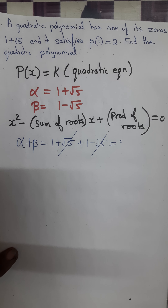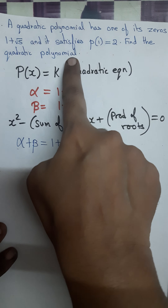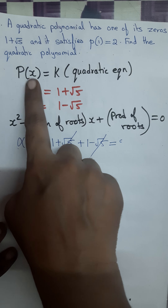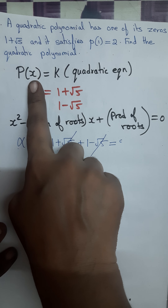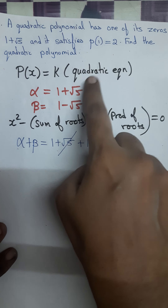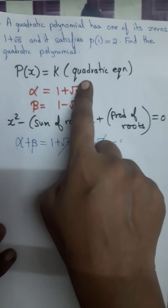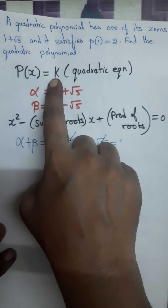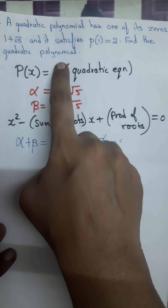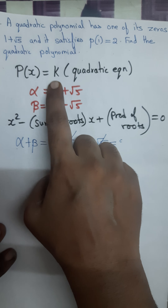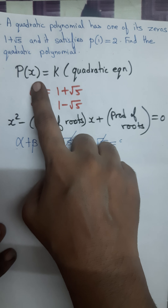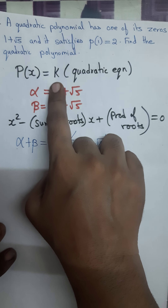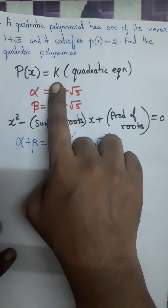First, let us see what a quadratic polynomial is. Let me denote the quadratic polynomial by p(x). A quadratic polynomial is obtained by multiplying a quadratic equation with a constant k. So this is how the quadratic polynomial is obtained.